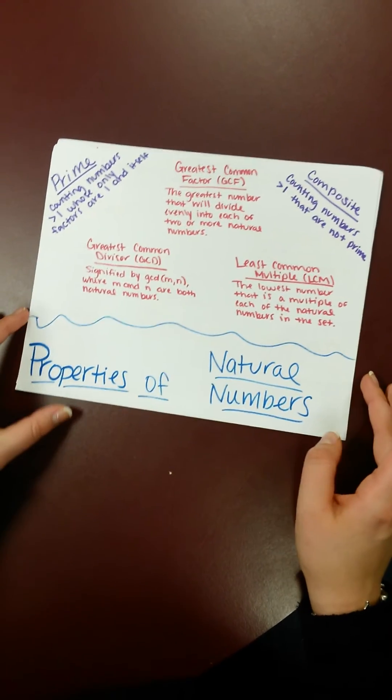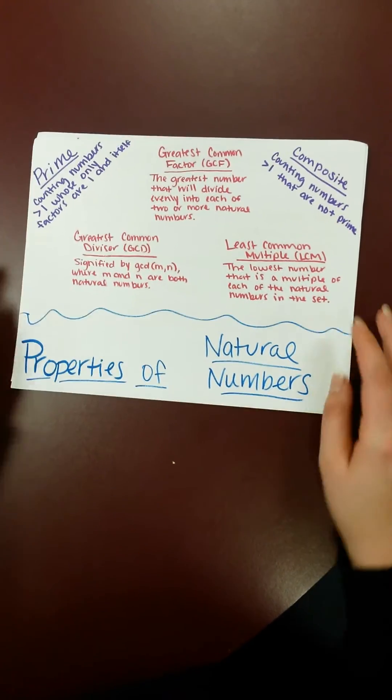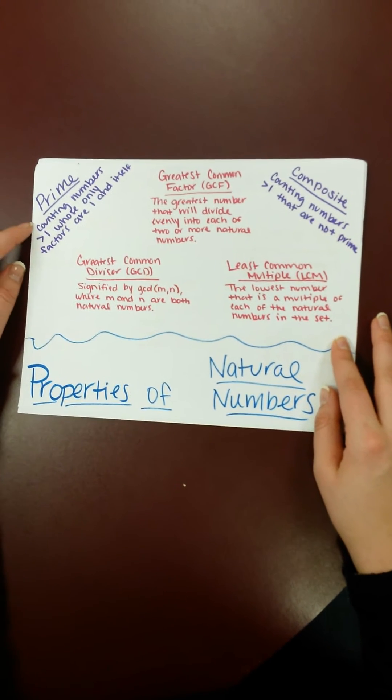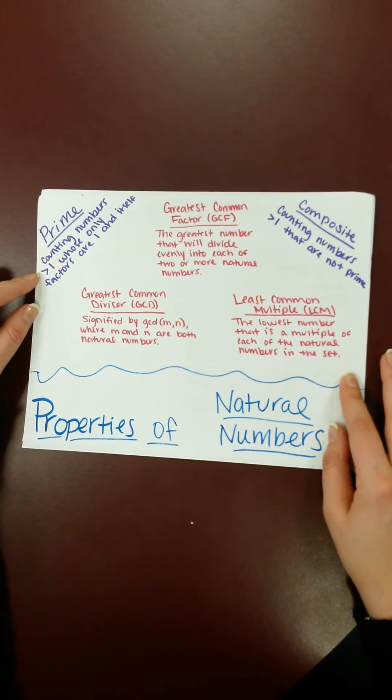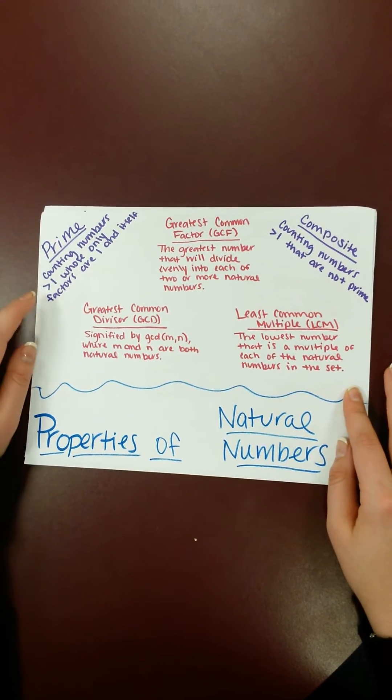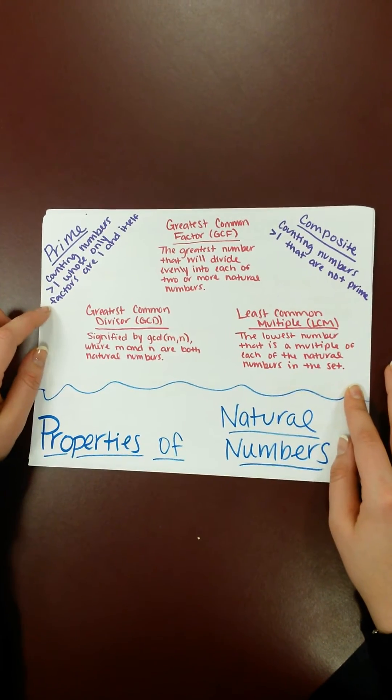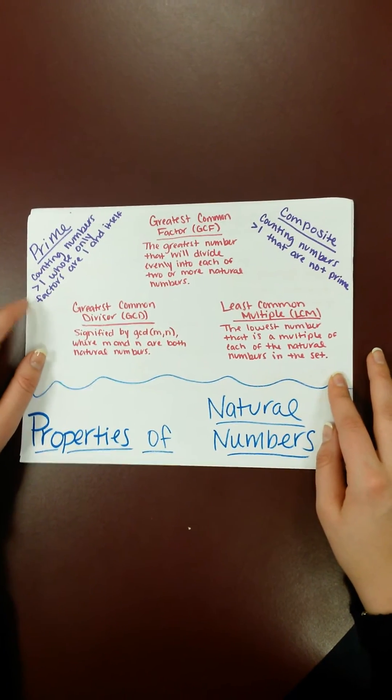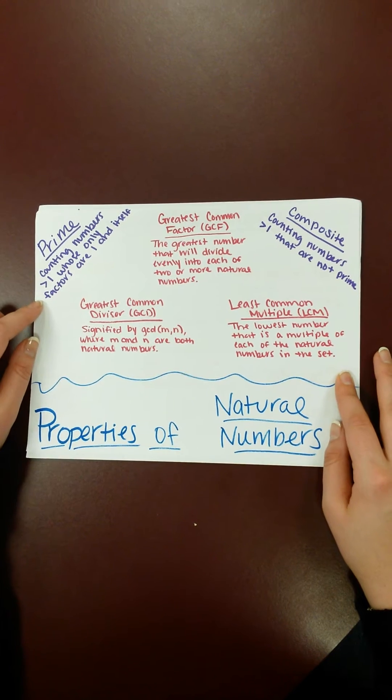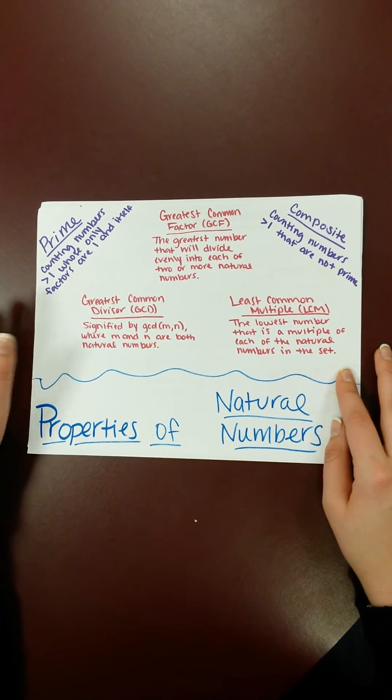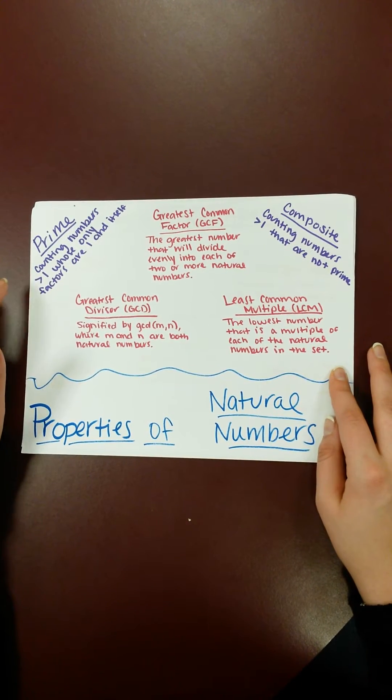So next I want to talk about the properties of natural numbers. Prime numbers are counting numbers that are greater than 1, whose only factors are 1 and itself. So an example would be like 1, 3, 5, 7. They're usually odd, but not always. Not all odd numbers are prime.